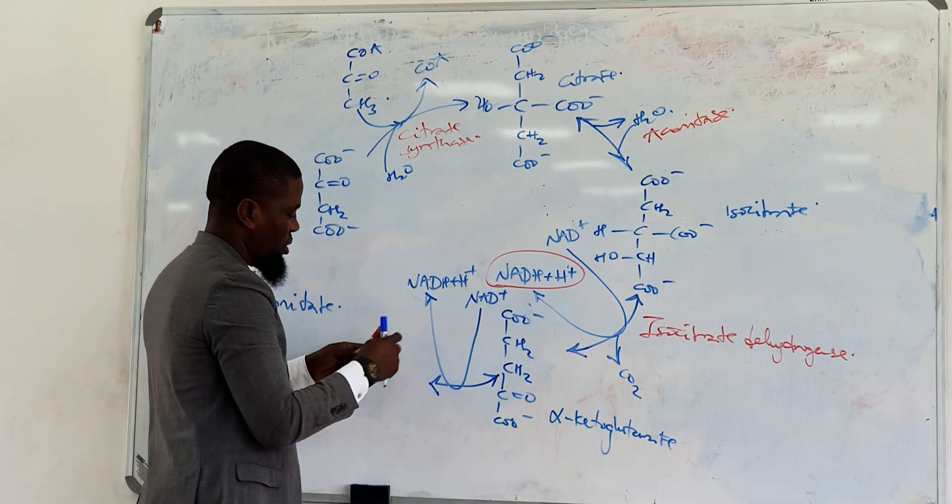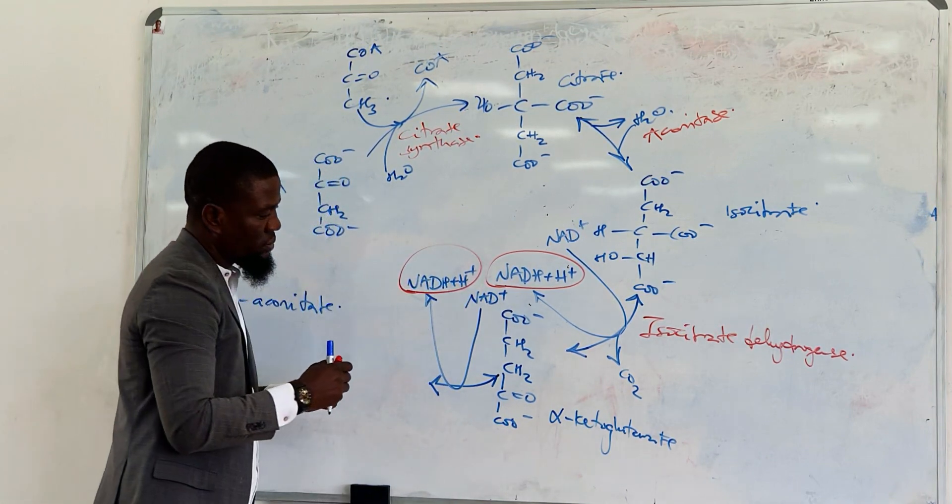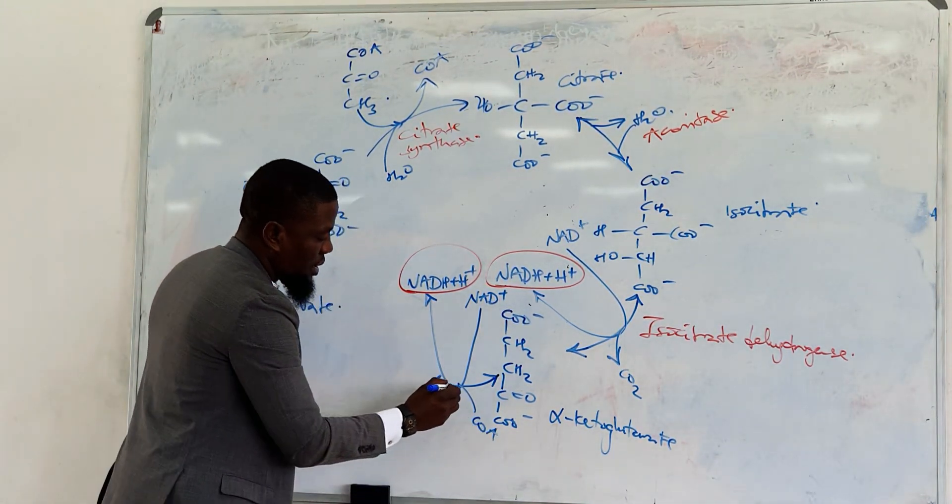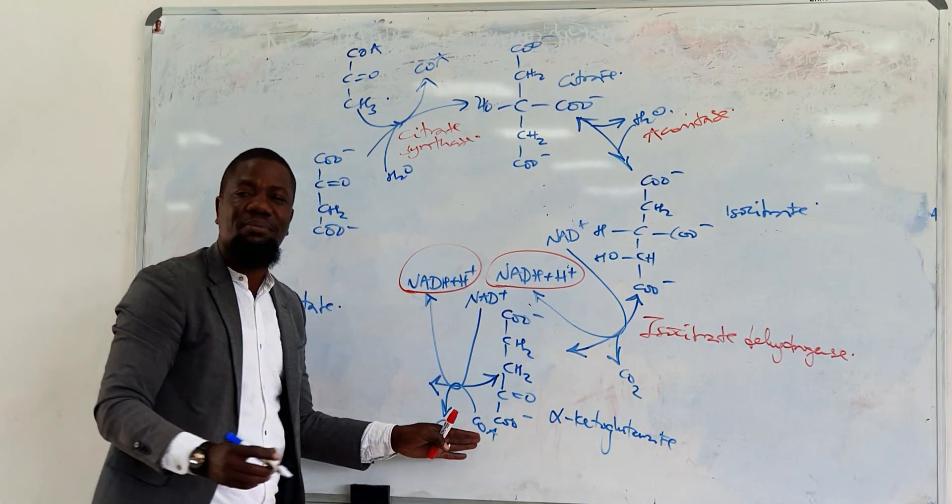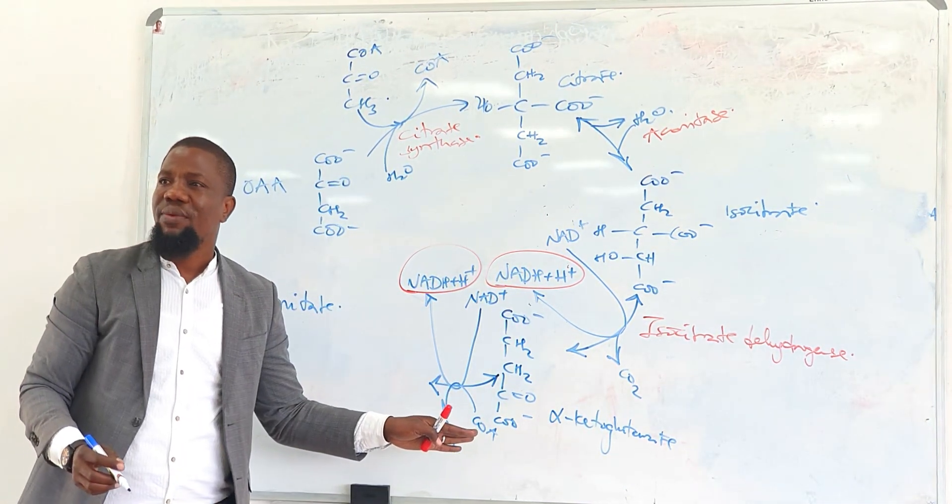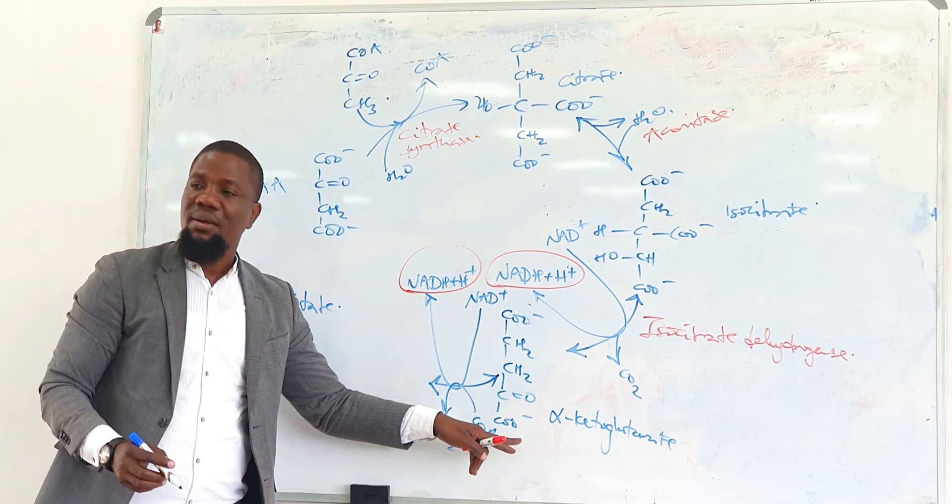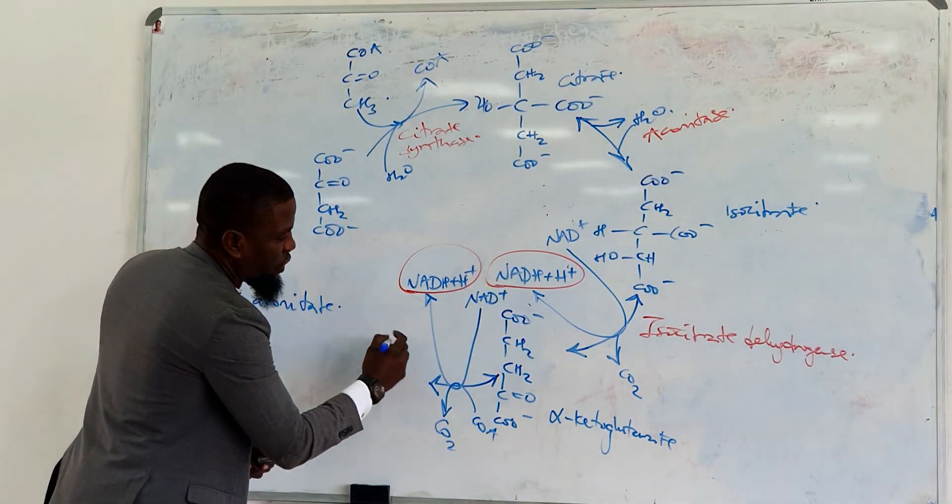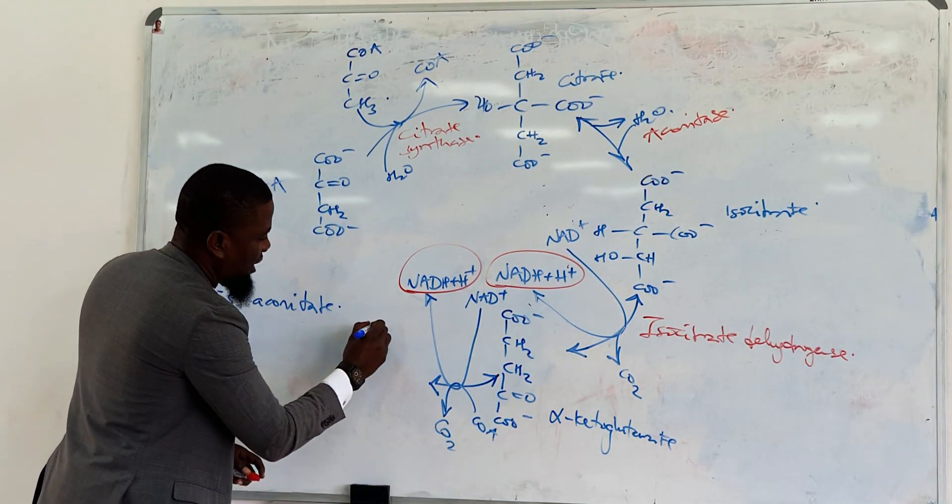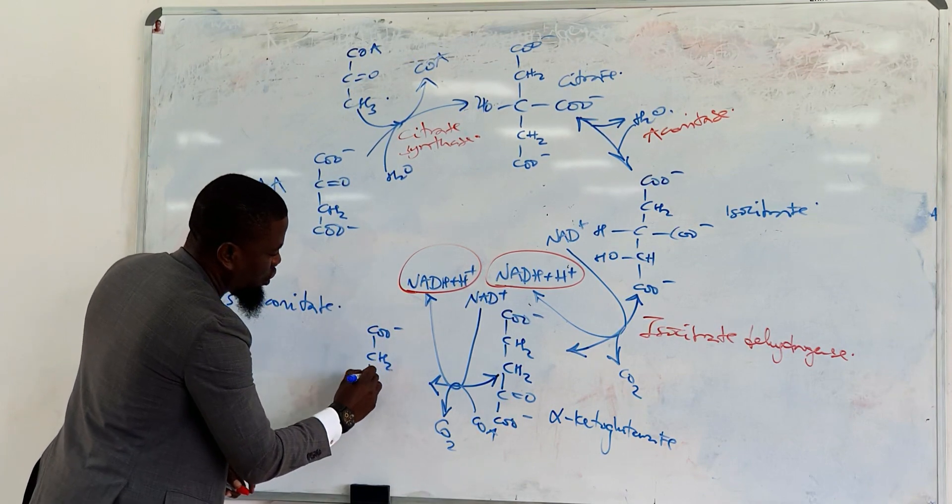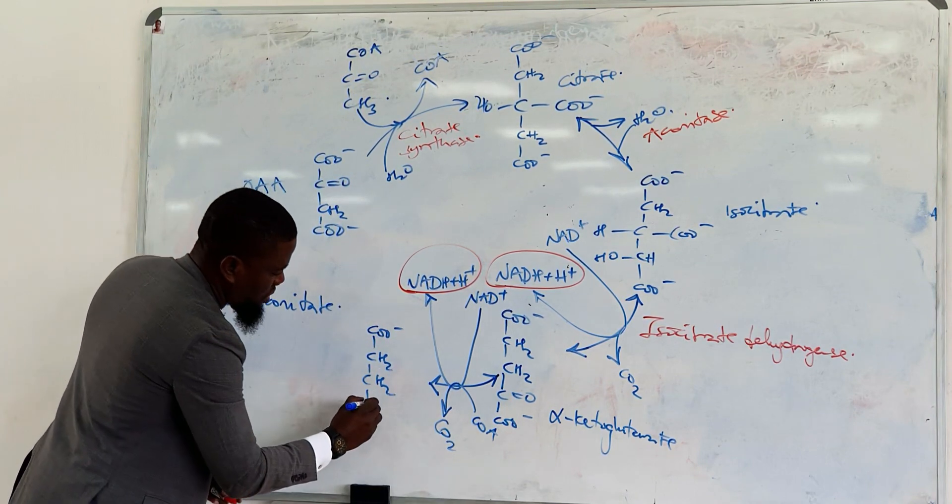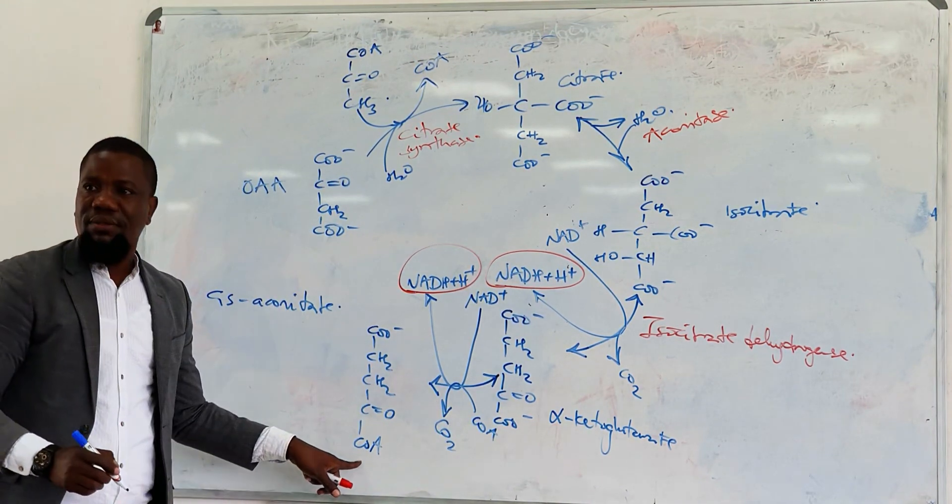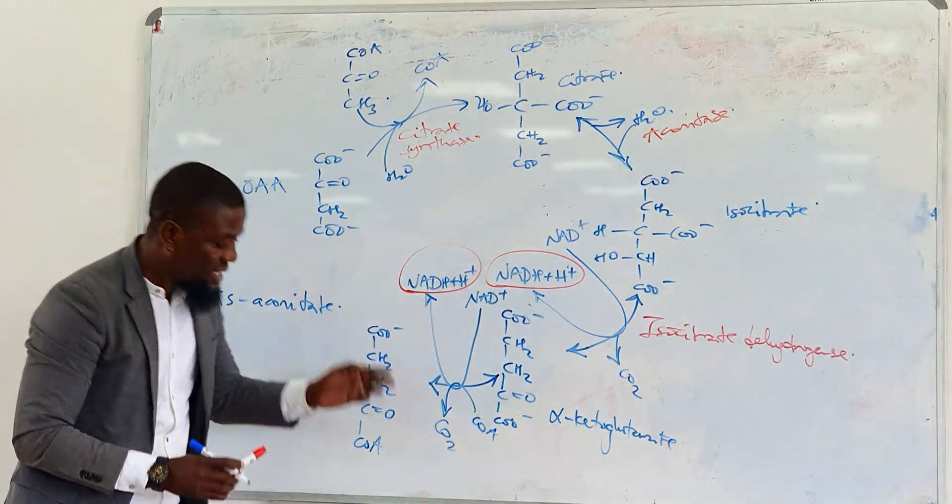NAD+ is converted to NADH, which we are calling energy. At the same time, the CoA is coming in and carbon dioxide is going out. This is basically what we saw in the reaction where we are producing acetyl-CoA from pyruvate.